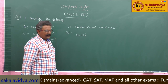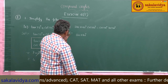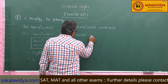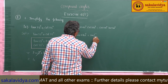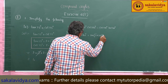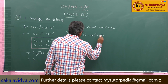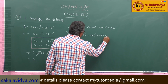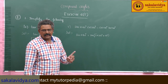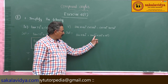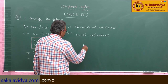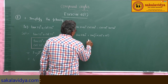Sin 1140 degrees — we can write this as sin of (3 × 360 degrees + 60 degrees). Using the formula sin(n × 360 + θ) = sin θ, this becomes sin 60 degrees.